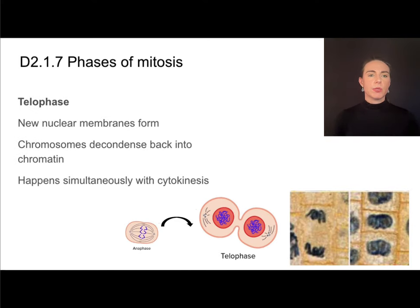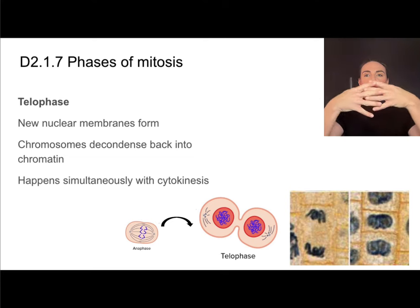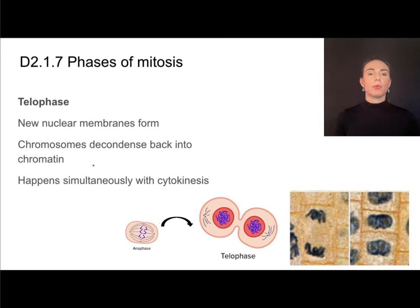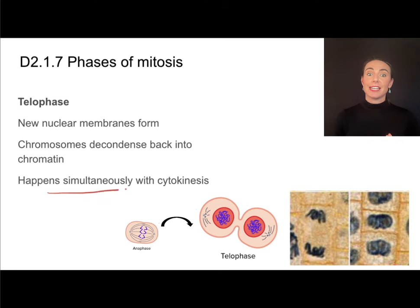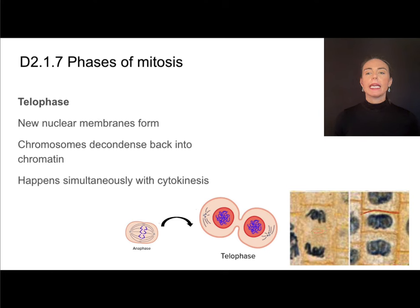The last phase of mitosis is telophase — I remember T for telophase, T for two. By the end of telophase, I should have two new nuclei. Once the genetic material is in those poles and doesn't need to move around anymore, those chromosomes can decondense back into chromatin and new nuclear membranes form around them. This happens simultaneously with cytokinesis. In this animal cell example, the cleavage furrow is forming, so cytokinesis and telophase happen at the same time. Here you can see early telophase and very late telophase — each pole has a full set of chromosomes and the cell plate is visible.